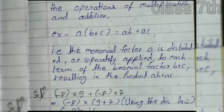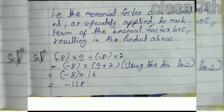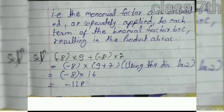Applying the distributive law: minus 8 multiplied by 9, plus minus 8 multiplied by 7. We factor out minus 8 separately and write minus 8 multiplied by the quantity 9 plus 7, which equals minus 8 multiplied by 16. The final answer is minus 128.